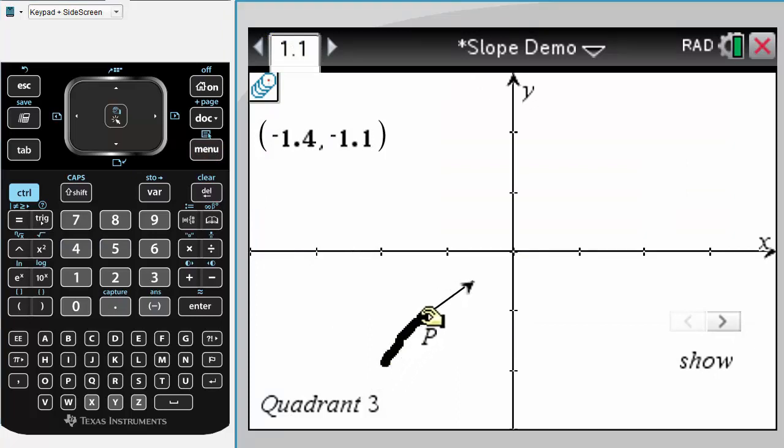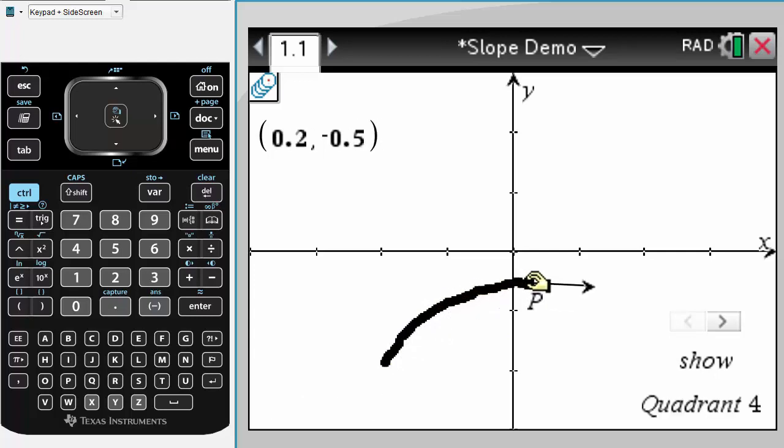So our slope vector has gone back to a positive slope. And our path is somewhat different because our initial conditions were different.